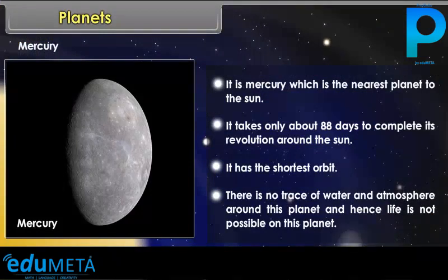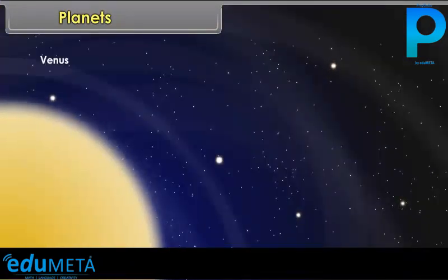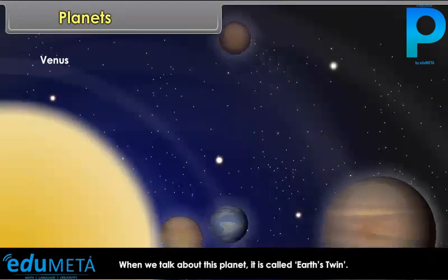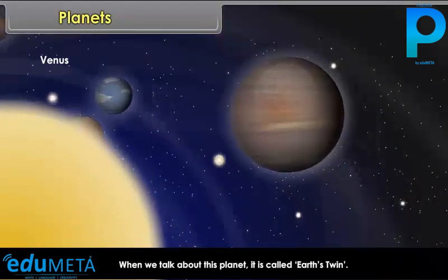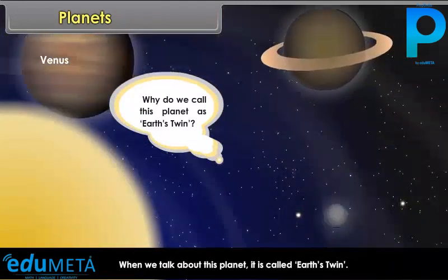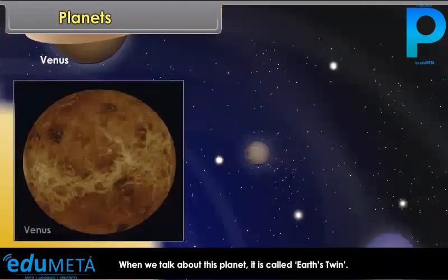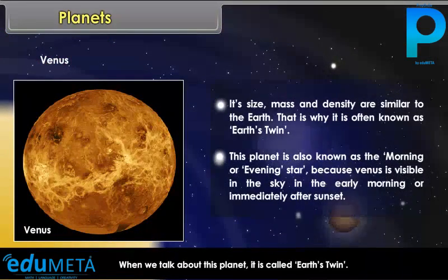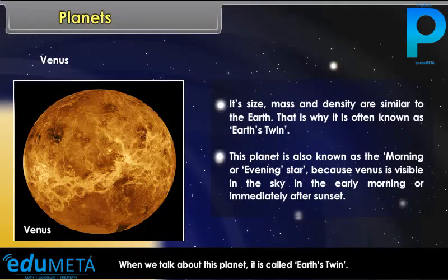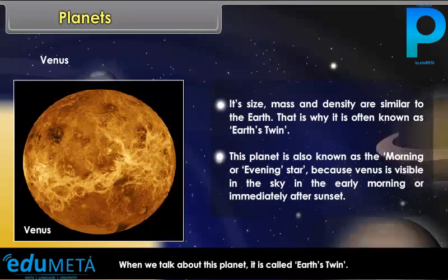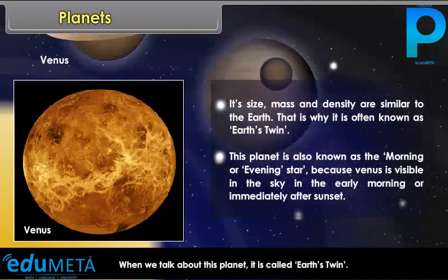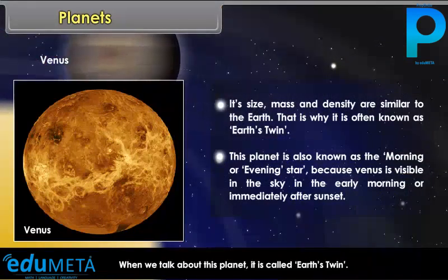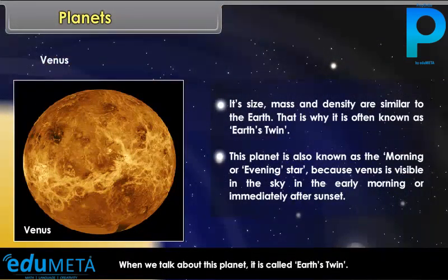Venus is called Earth's twin because its size, mass and density are similar to the Earth. This planet is also known as the morning or evening star because Venus is visible in the sky in the early morning or immediately after sunset.